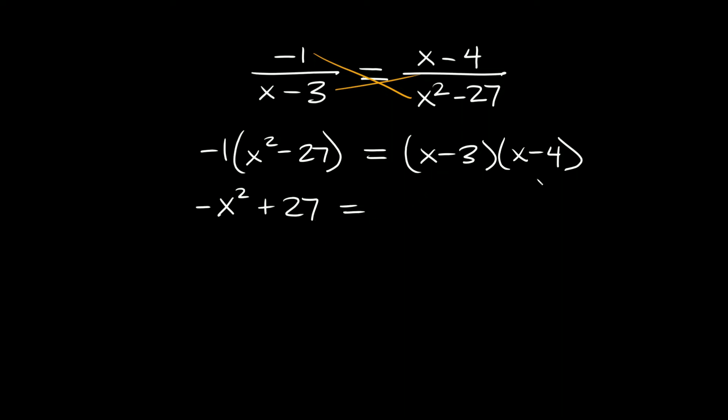We want to multiply everything together. So here we have negative x squared plus 27, and that equals this guy over here which we have to FOIL. So we have x squared minus 4x minus 3x which equals negative 7x, and then negative 3 times negative 4 is positive 12.